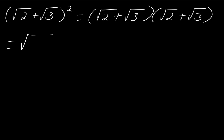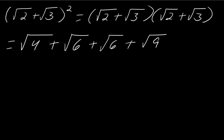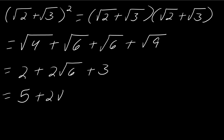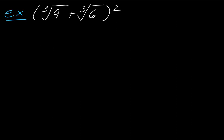So this gives me the square root of 4 plus the square root of 6 plus the square root of 6 plus the square root of 9. This turns into 2 plus 2 times the square root of 6 plus 3. So this becomes 5 plus 2 times the square root of 6. Let's try one more of these — work it out from start to finish and hit play when you're ready.